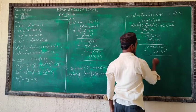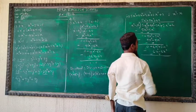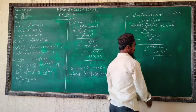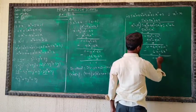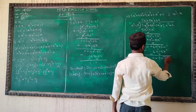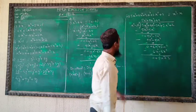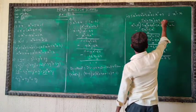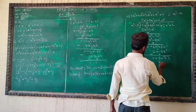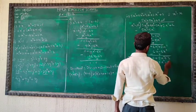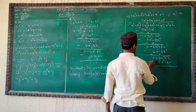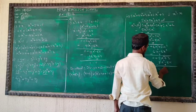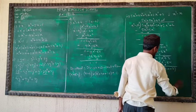Next quotient term: 8x² divided by x² — same power, take only the number 8. Multiply 8 by (x² - x): 8x² - 8x. Subtract — 8x² cancels, leaving remainder 8x + 2.